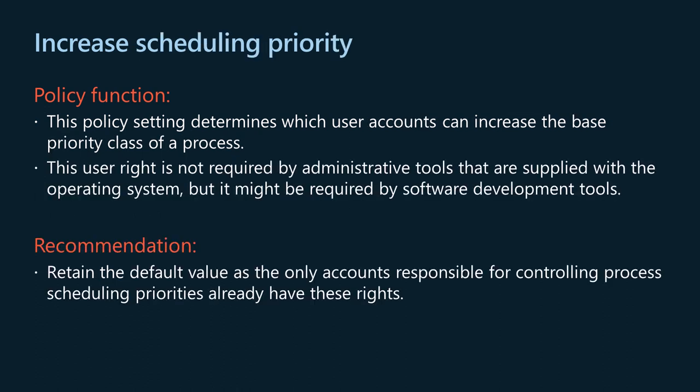The increase scheduling priority policy setting determines which user accounts can increase the base priority class of a process. It is not a privileged operation to increase relative priority within a priority class. This user right is not required by administrative tools supplied with the operating system, but it might be required by software development tools. Specifically, it determines which accounts can use a process with write property access to another process to increase the run priority assigned to that process. A user with this privilege can change the scheduling priority of a process through Task Manager. Retain the default value, as only accounts responsible for controlling process scheduling priorities already have these rights.